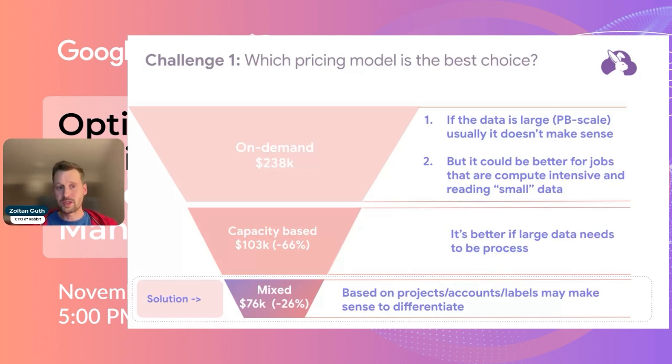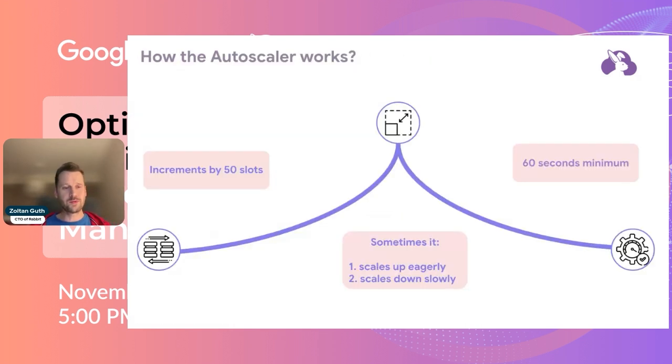This is something that I recommend: always check how many slots are consuming your BigQuery jobs, at least on a project level, and calculate what would be the cost for the reservations or for the on-demand price and check which one makes sense to you. You can use the information schema in BigQuery to see what your jobs are and how much data they are reading or how many slots they are using.